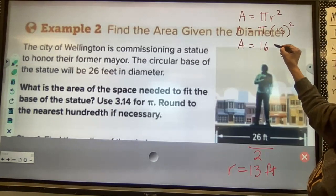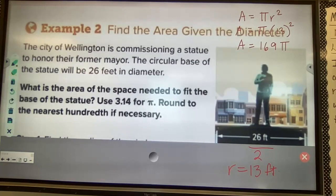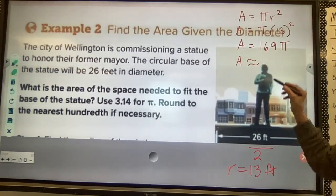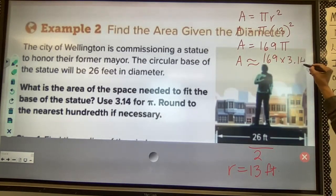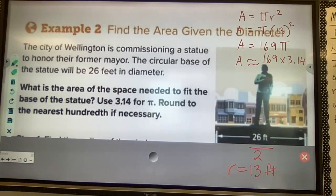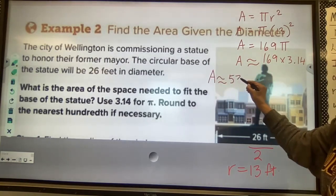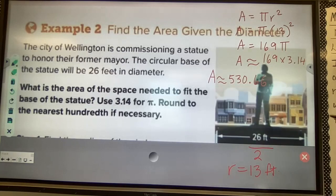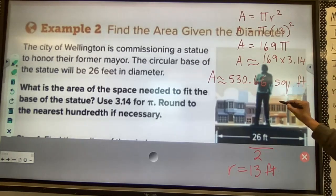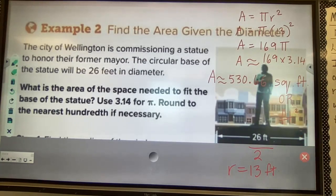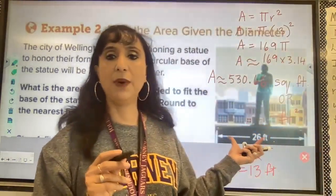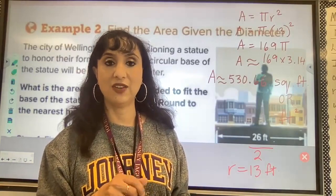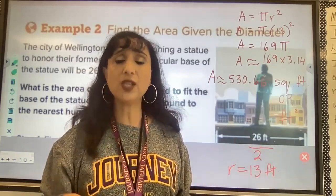Area equals 169 pi. I am going to replace with the value of pi, so this equal to changes to approximately because pi is an approximation — 169 times 3.14. When I multiply that, I get area approximately equal to 530.66 square feet. Do not put the exponent over the numerical part, because otherwise that means something completely different — it would mean 530.66 times 530.66. Please be careful that the exponent goes after the unit, meaning square feet.